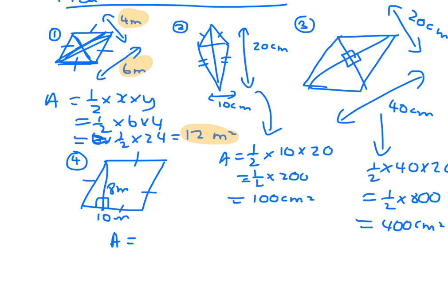And here, area equals base times height, which is 10 times 8, which is 80 meters squared.